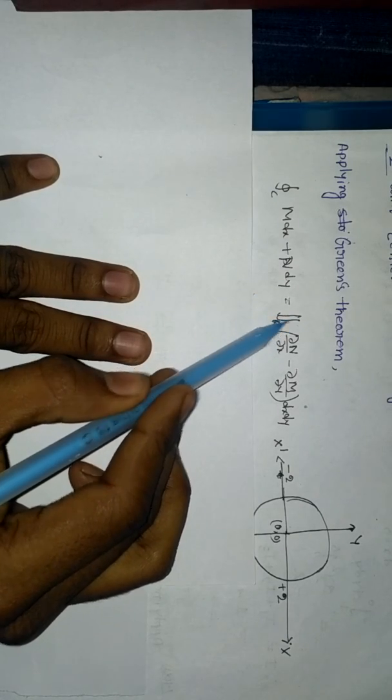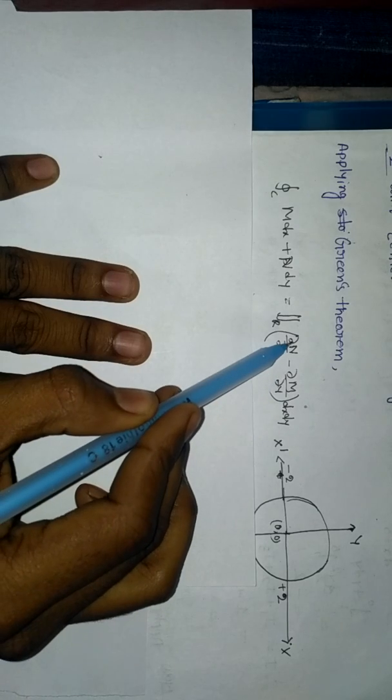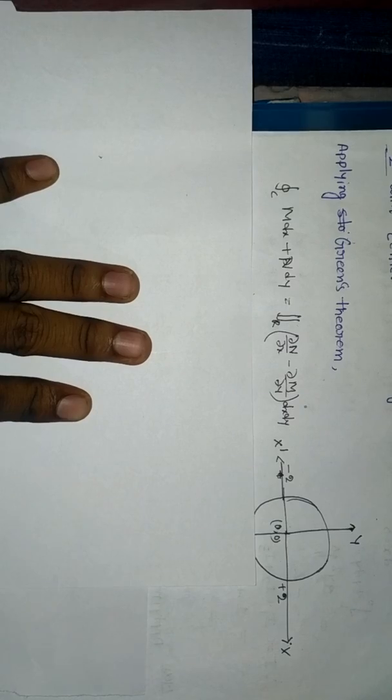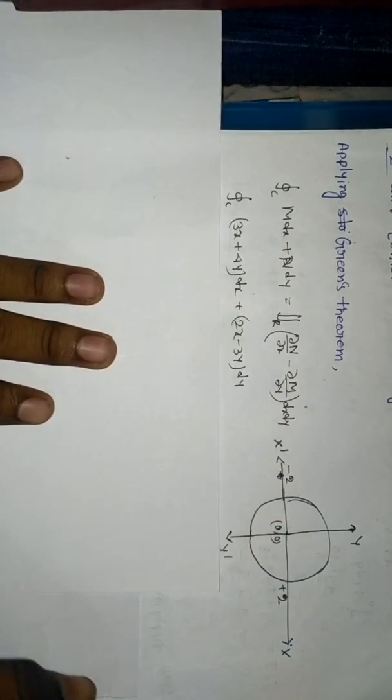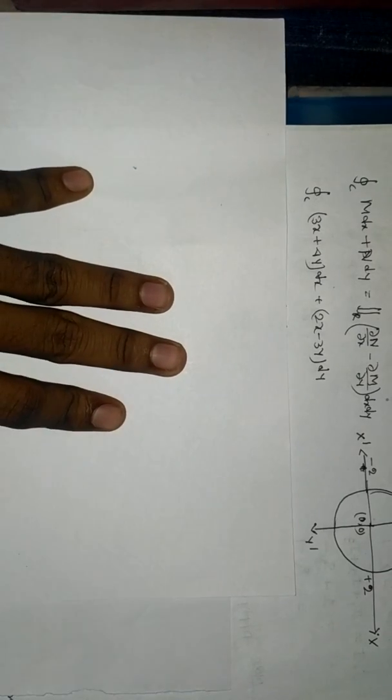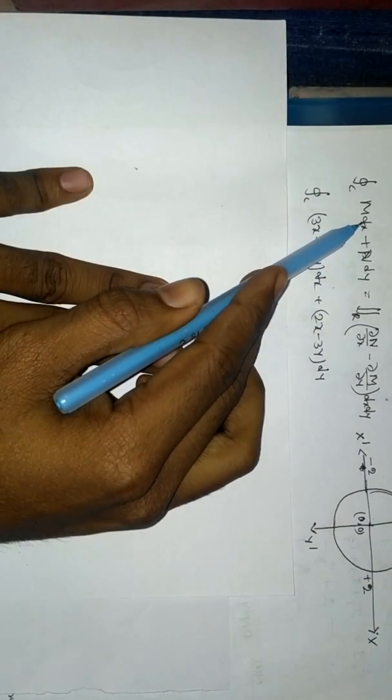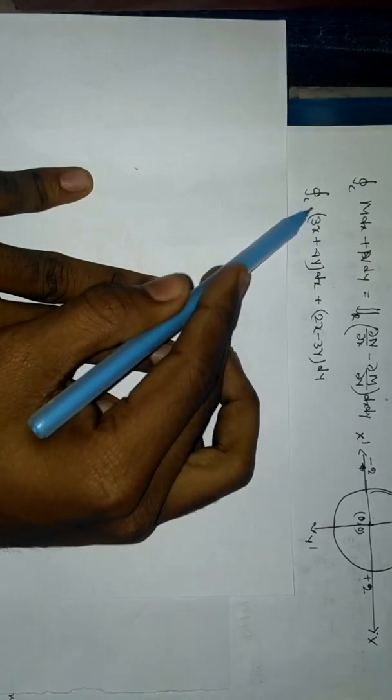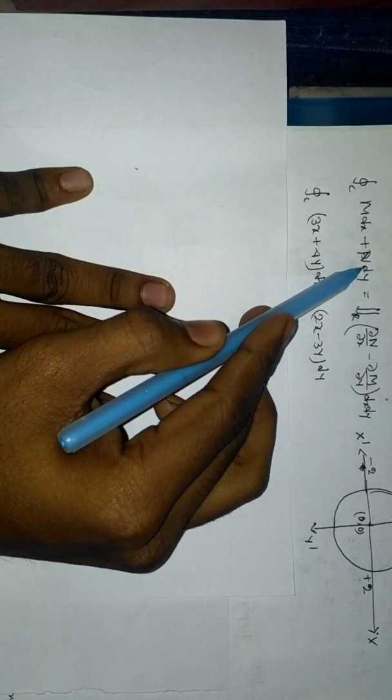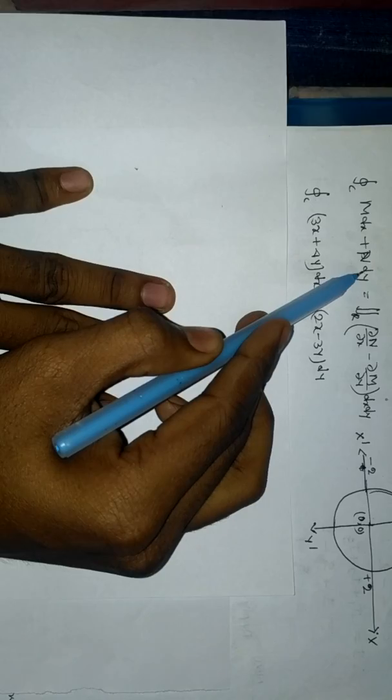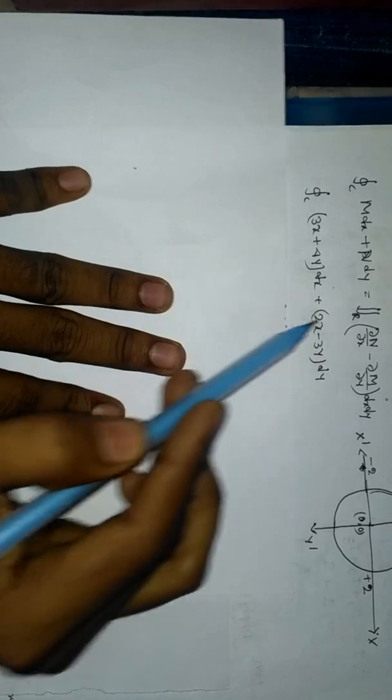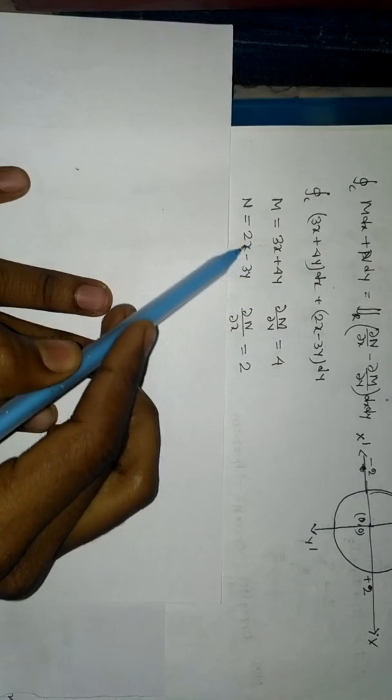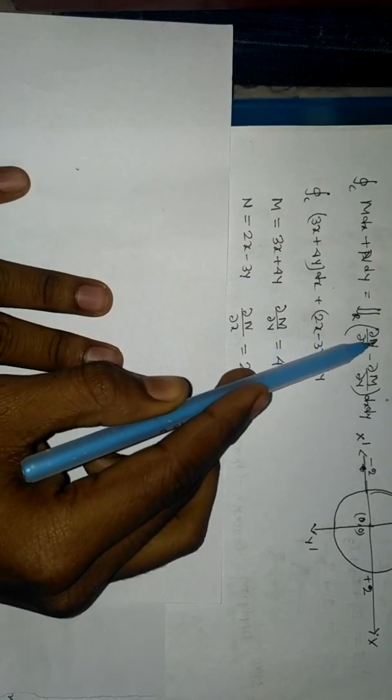...the double surface integration of del N del X minus del M del Y dx dy. Here, M will be the coefficient of dx, which is 3x plus 4y, and the coefficient of dy will be N, which is 2x minus 3y.